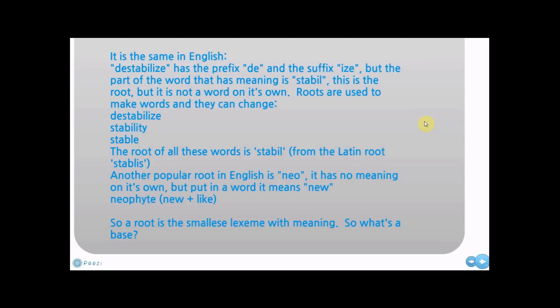The root of all these words is stabil, from the Latin word stabilis. Another popular root in English is neo. It has no meaning on its own, but put in a word, it means new. Neophyte, new plus like. So a root is the smallest lexeme with meaning. So what's a base?